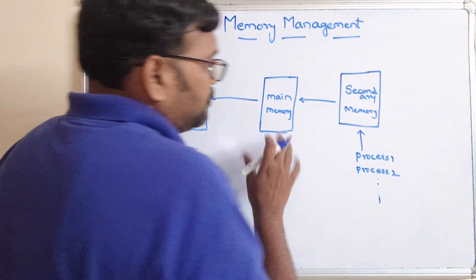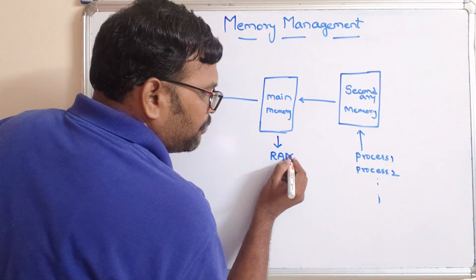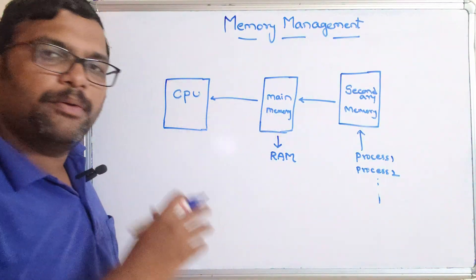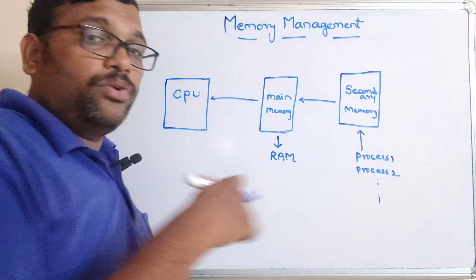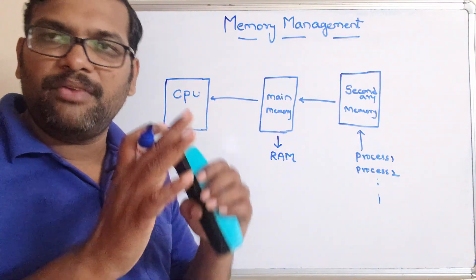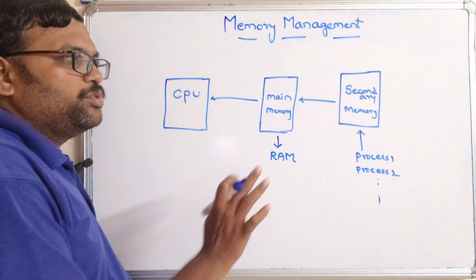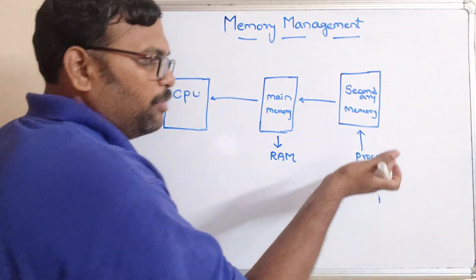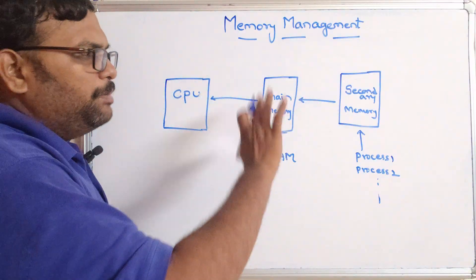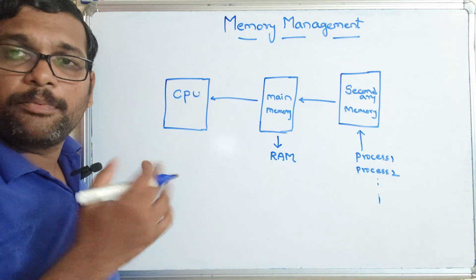This main memory we can call it as RAM. Whenever there is a power off, whatever information is stored in this main memory will be erased. But in secondary memory, even if there is a power off, the data available in secondary memory will be saved. So the CPU will be executing only the processes available in the main memory — whatever process needs to be executed will be copied to the main memory.